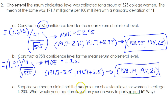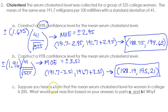Suppose you hear a claim that the mean serum cholesterol level for women in college is 200. What would your reaction be, considering the answers we got for A and B? We'd say we're very skeptical about the 200. We were 95% sure that the true mean cholesterol level is somewhere within this interval, and 200 is significantly higher than that. It's higher than both intervals, but we're especially surprised that it's so far out of our 95% confidence interval — because 19 times out of 20, we'd expect the truth to fall within this interval. So this would be a rare, rare mistake.